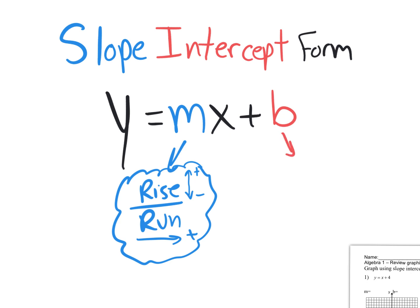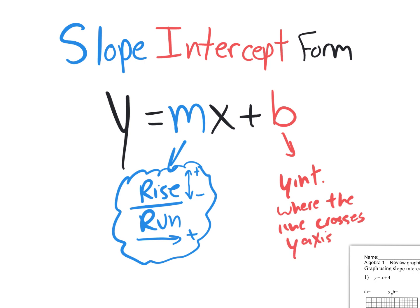Now, what about that b value? That's going to be a number that's simply the y-intercept. And what does that really mean — y-intercept? It's where the line crosses the y-axis. Most of us already know this because we learned it in semester one. y equals mx plus b — the m is the slope, a fraction, rise over run, that tells you how steep the line is going to be. The b is the y-intercept — it tells you where it crosses the y-axis.